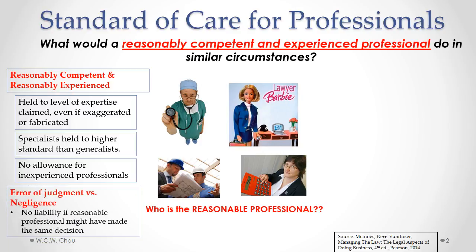Professionals are allowed to make errors of judgment and not be held liable for them. There is a difference between an error of judgment and negligence. An error of judgment is where a reasonable professional in that same situation might have made the same decision. That would be considered an error of judgment for which there is no liability under negligence.